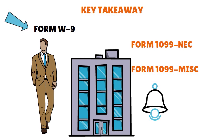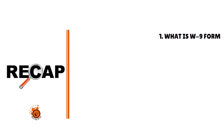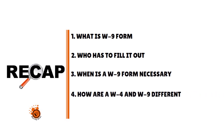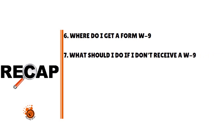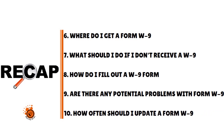The main purpose of the W-9 is to provide your correct taxpayer ID number to the company you are contracting with. Today we covered: what is a W-9 form, who has to fill it out, when the form is necessary, how W-4 is distinct from W-9, the difference between a 1099 and W-9, where to get a Form W-9, what to do if you don't receive a W-9, how to fill out a W-9 line by line, potential problems with Form W-9, and how often you should update Form W-9.